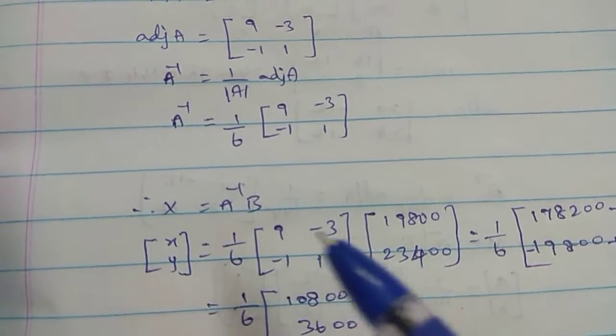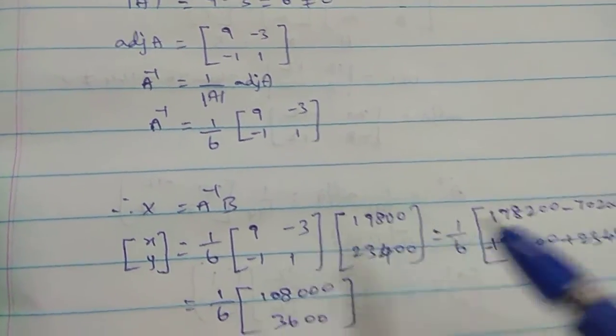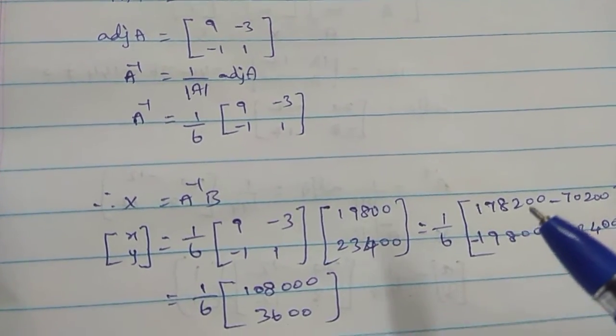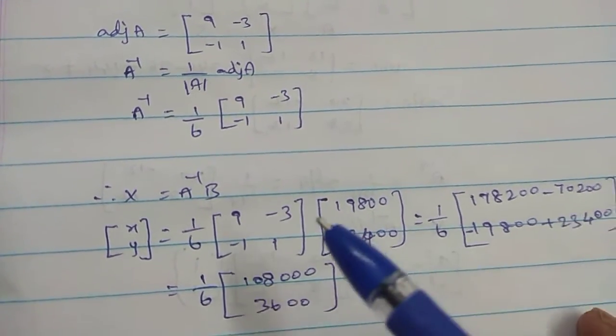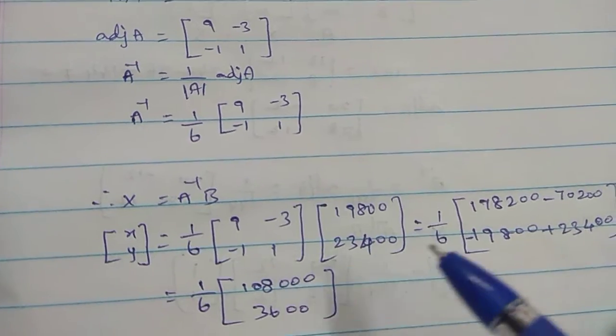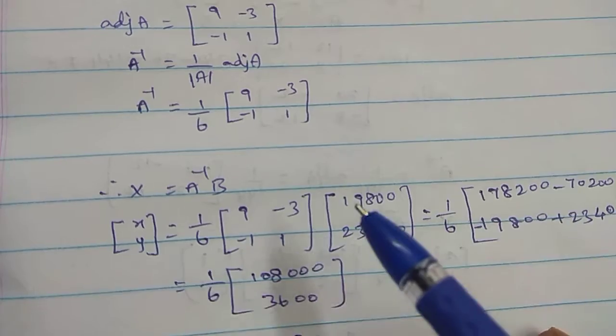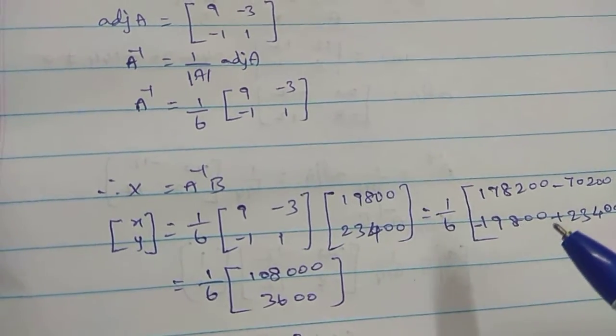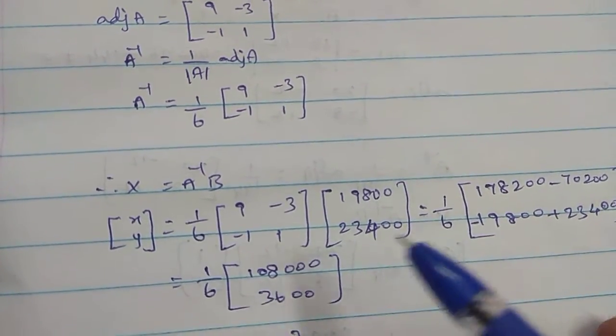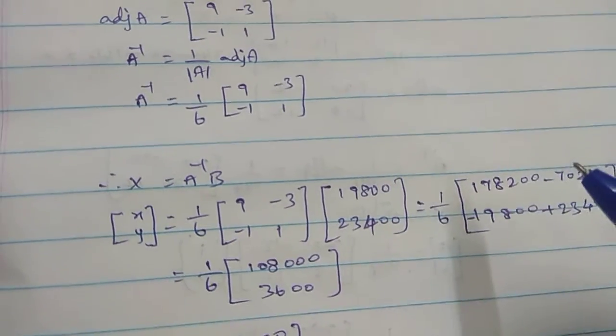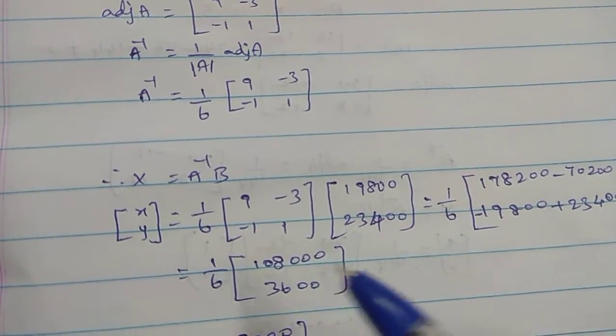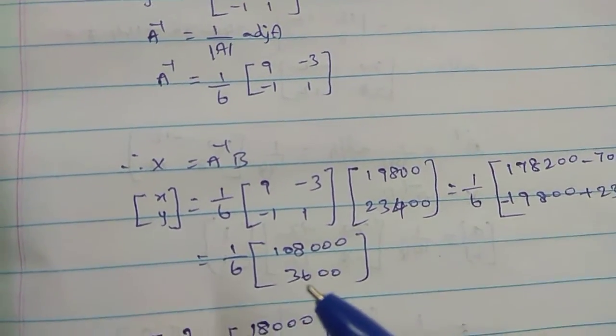So first row first column: 9 into 19,800 equals 1,78,200. Minus 3 into 23,400 equals 70,200. Second row: minus 1 into 19,800 plus 1 into 23,400. In the next row subtractions: 1,08,000. In the next row subtractions: 3,600.